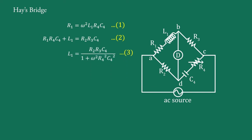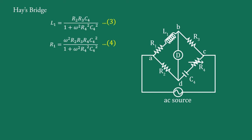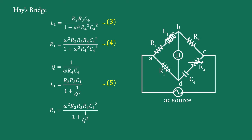Here L1 depends on omega, that is, frequency. Putting this value into equation 1, we have R1 equals omega²·R2·R3·R4·C4² upon (1 + omega²·R4²·C4²) — equation 4. Since R4 and C4 are in series in that arm, the quality factor is Q equals 1 upon omega·R4·C4. Using this, equations 3 and 4 can be rewritten as: L1 equals R2·R3·C4 upon (1 + 1/Q²) — equation 5, and R1 equals omega²·R2·R3·R4·C4² upon (1 + 1/Q²) — equation 6.